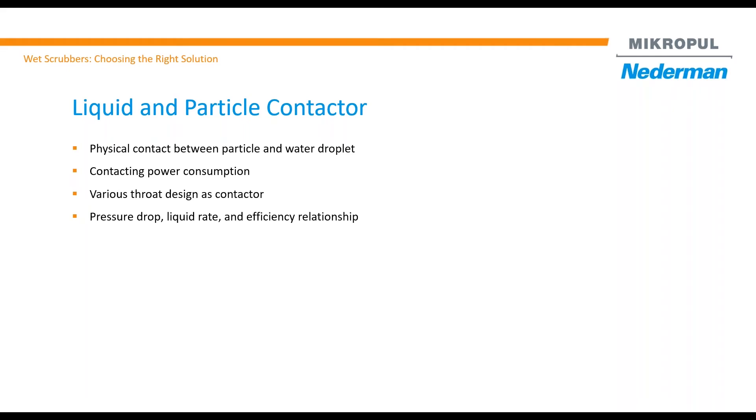What is a scrubber? A scrubber is basically a liquid and particle contactor. If you look outside when it rains in nature, all the pollution we generate and fine droplets in the air get washed out by water droplets. That's a physical contact between particle and water droplet.